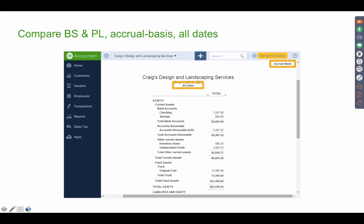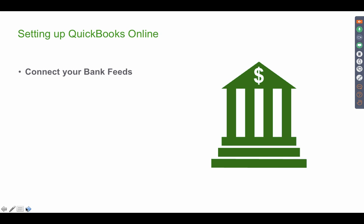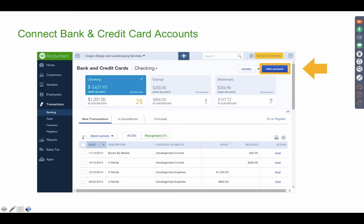After the conversion, some accounts may be slightly off. If the differences are immaterial, do a journal entry to adjust and move on. If the amounts are material, research account by account to find what came in differently or what caused the discrepancy. After setting up the account, cleaning up the chart of accounts, and importing data, the next step is to connect bank feeds so you can catch up and then move forward in real-time with the bank.